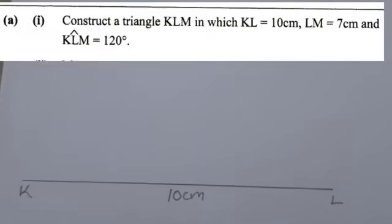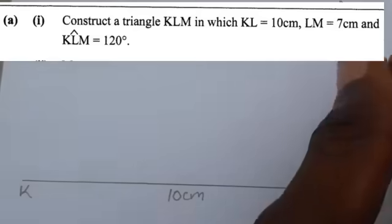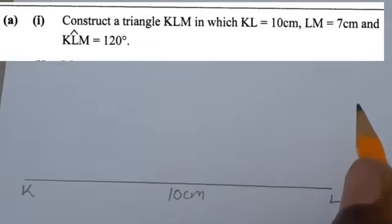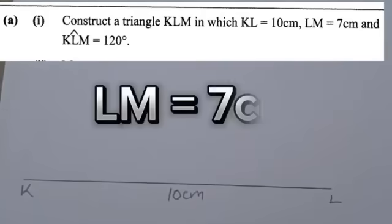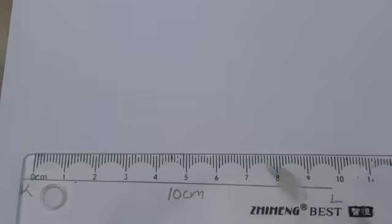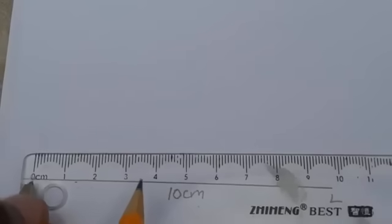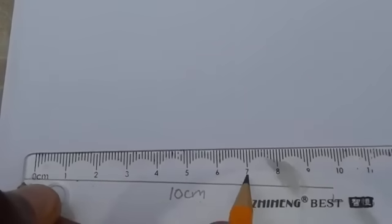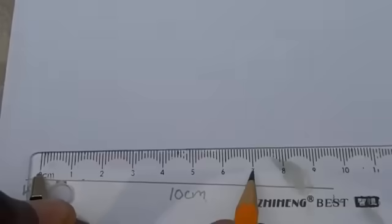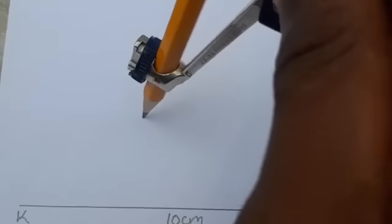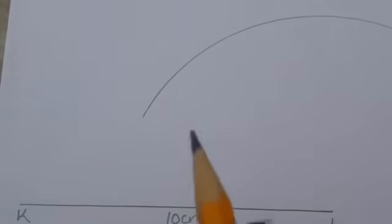The question says the line LM — L up to where M is — is 7 centimeters. Get your ruler and compass and collect the measurements of 7 centimeters from 0. Because M is somewhere above, you get your compass point, put it at L and then make an arc.